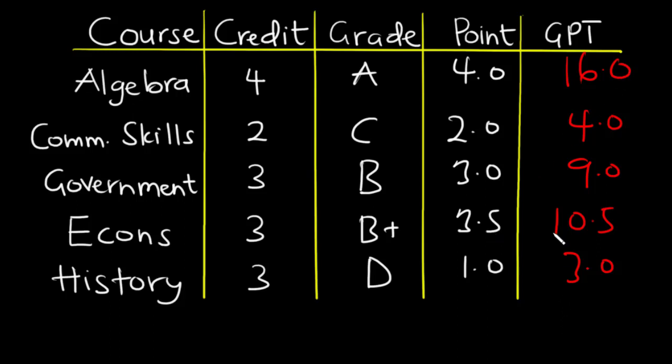Now to find the GPA, you need to sum up all these values and divide by the total credit. Now 16 plus 4 is 20, 20 plus 9 is 29, 29 plus 3 is 32, and 32 plus 10.5 is 42.5, and this is the total grade point.